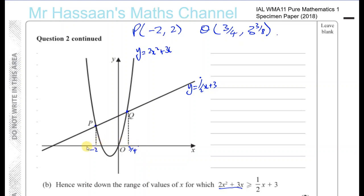And if you choose a value over here, the curve has a higher value than the line. But if you choose a value between minus 2 and 3 quarters, the curve has a value which is less than the line.